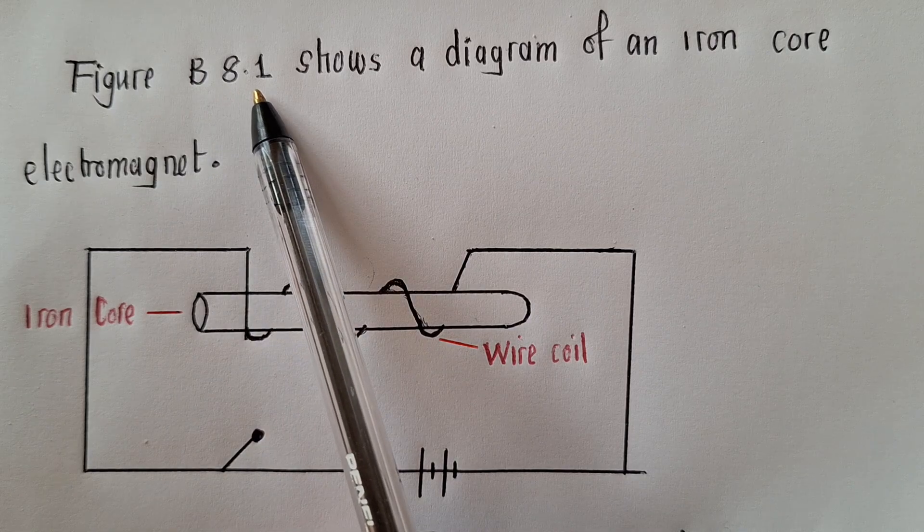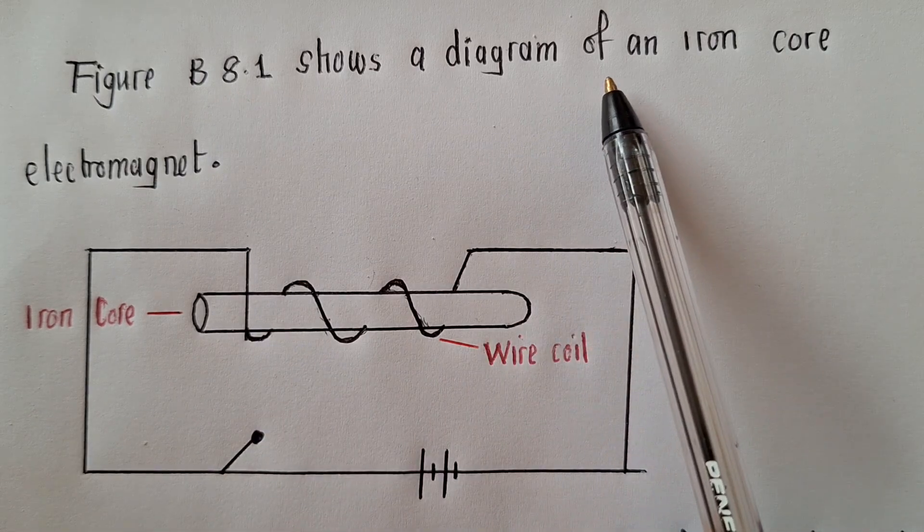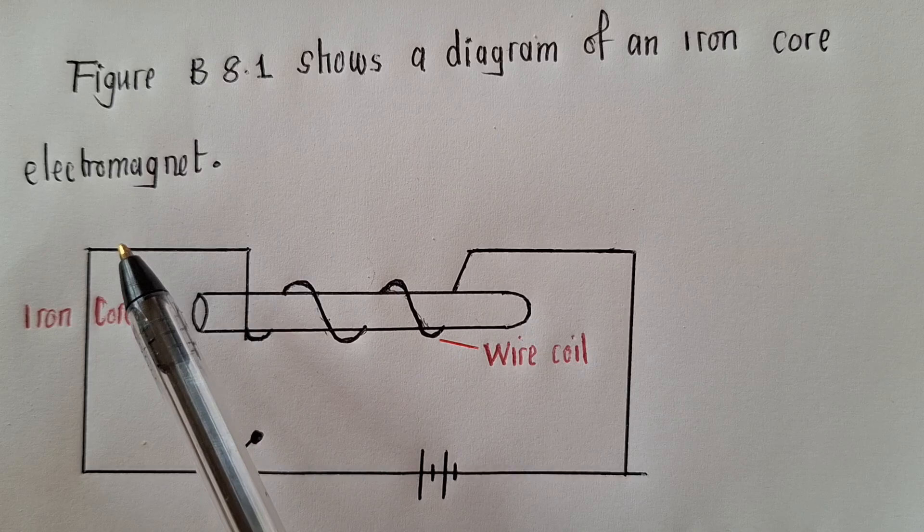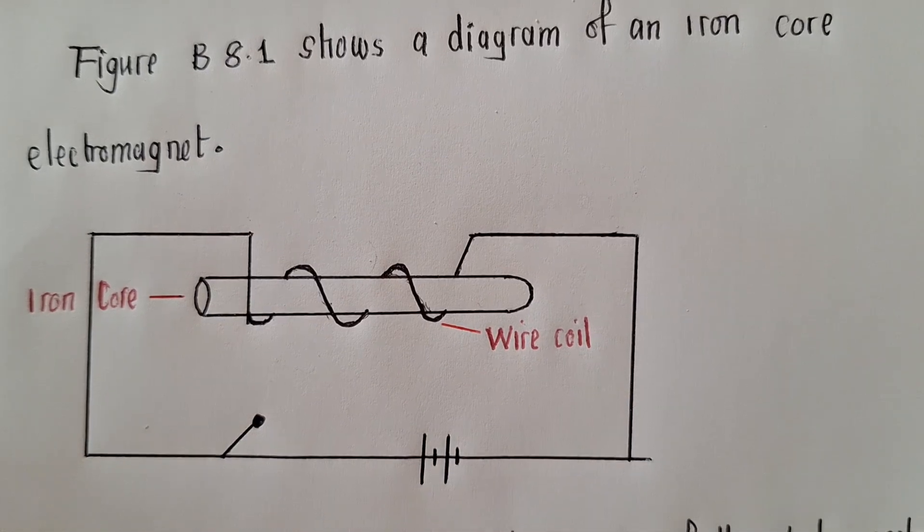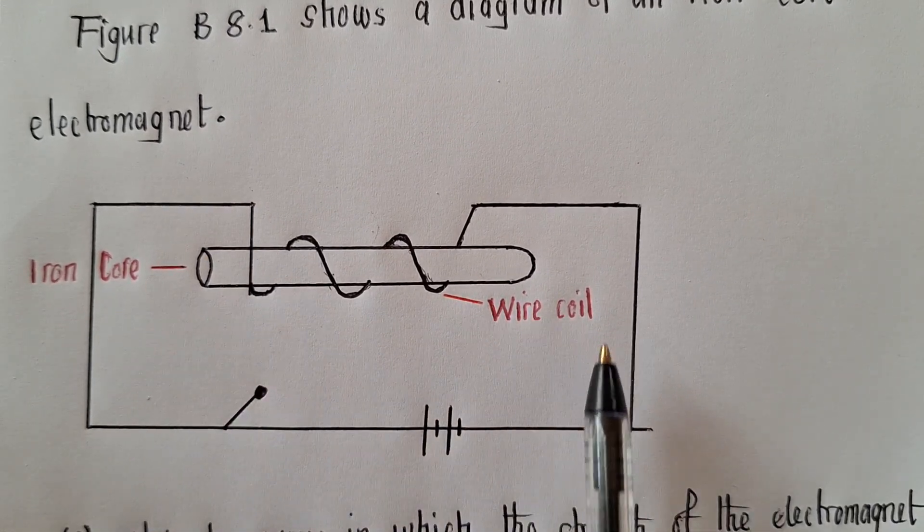Figure B 8.1 shows a diagram of an iron core electromagnet. So this is a diagram that we have right over here.